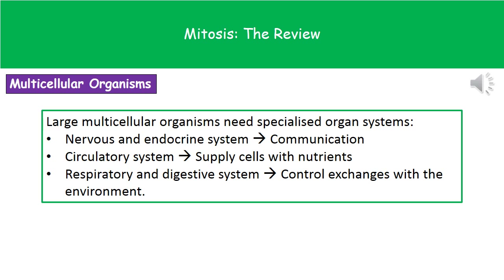Large multicellular organisms have specialized organ systems to carry out certain functions. We've got things like the nervous and endocrine system for communication, the circulatory system to supply our cells with nutrients, and the respiratory and digestive systems controlling exchanges with the environment. Each one has its own part to play in allowing that multicellular organism to reach the size it has.